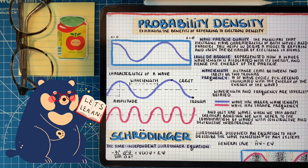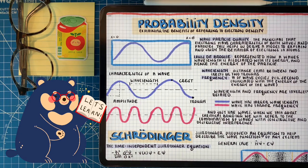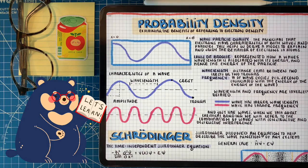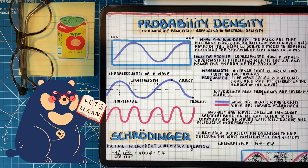Frequency is related to energy. And since frequency and wavelength are inversely related, if we have a higher wavelength, we'll have a lower frequency.